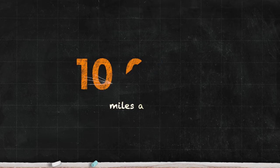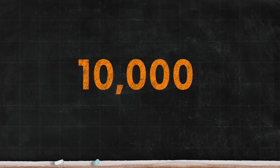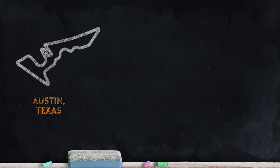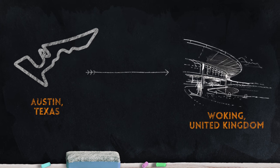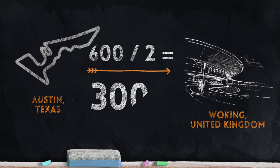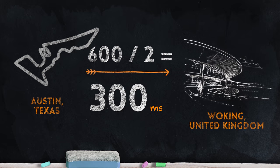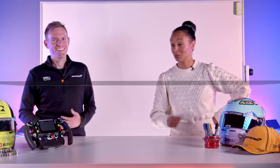Then again, it is 10,000 miles away. Let's test your maths: how long would it take for data to travel from an F1 car at the US Grand Prix back to the MTC? Let's say Austin, Texas to Woking in the UK — that's probably around half the distance to Australia, so presumably half the amount of time? Correct — it's about 300 milliseconds. None of that boring sitting around for 300 milliseconds waiting for your data to arrive!